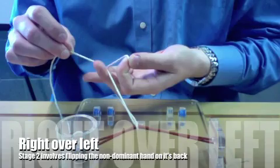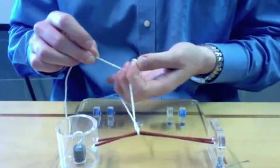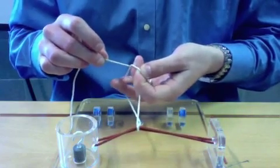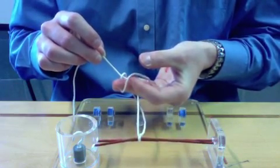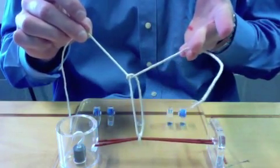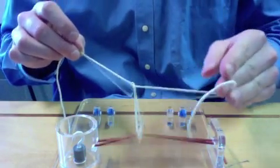I hook the right string with my left middle finger, pull the right string lateral to the left string, push the left string so that it falls between my middle and ring finger, then pull it through the loop and tighten it.